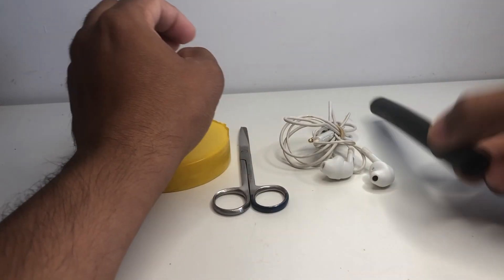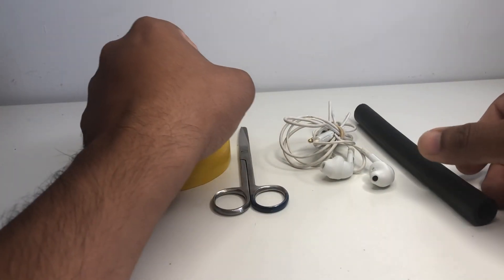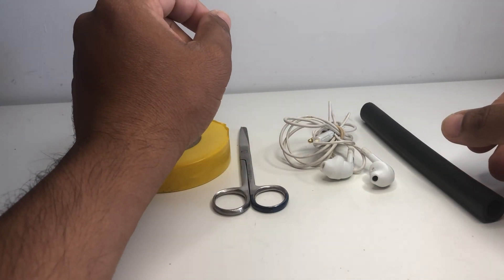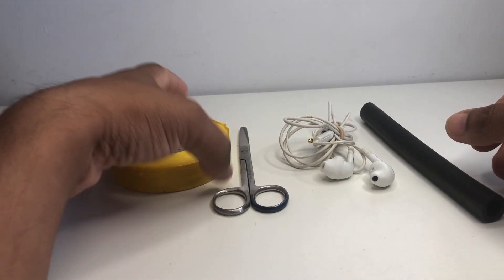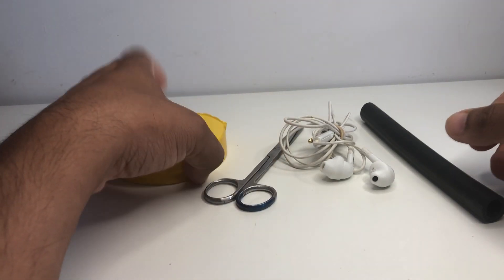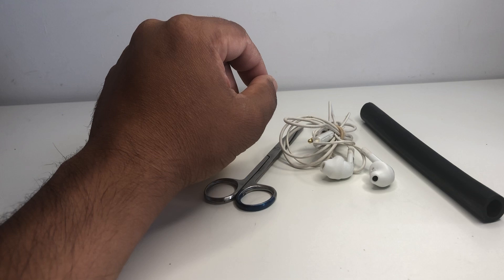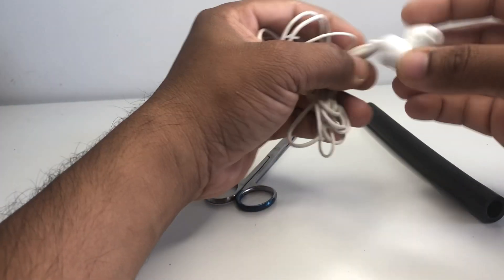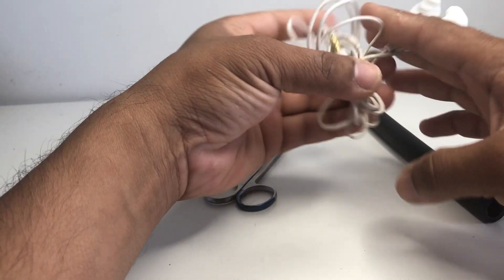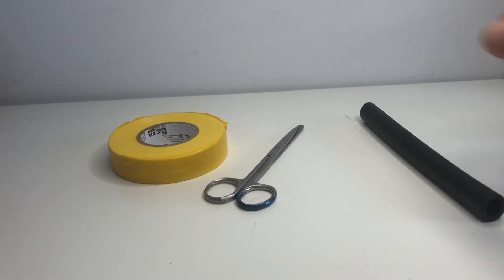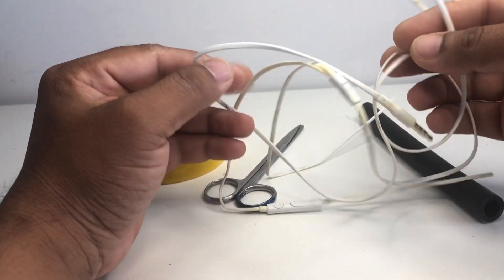For this, you need a rubber pipe of any size you like, scissors, sticky tape, and damaged earphones. What you have to do is cut the heads of the earphones first and just use the mic. I have already cut the head of my old hands-free.